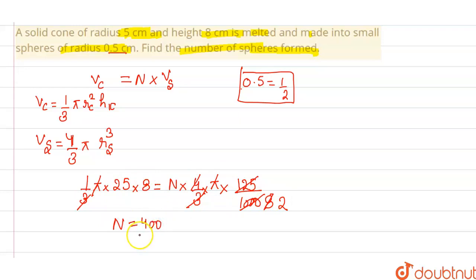this will become 4. So, number of articles will be equal to 400 or number of spheres, small spheres will be 400. That's all. From my side, thank you everyone. Have a great day.